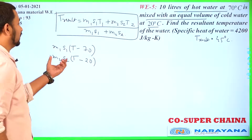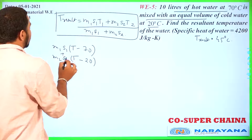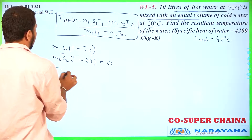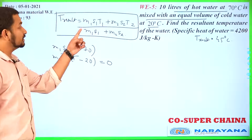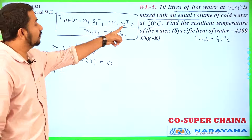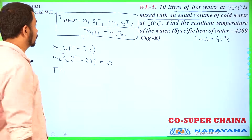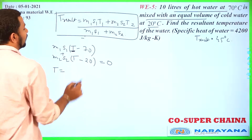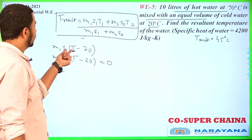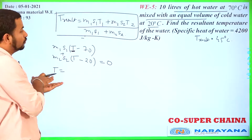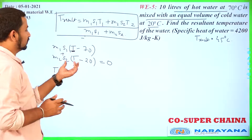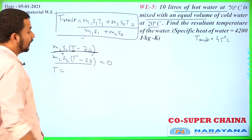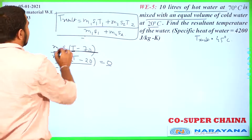The total heat exchange, since no heat is exchanged with the surroundings, is equated with 0. If we equate this with 0 and solve for T, the value comes as m1s1t1 plus m2s2t2 divided by m1s1 plus m2s2. We have taken the common temperature to be higher than both 70 and 20 degrees. The net heat exchange is zero because no heat is lost to the surroundings, giving us T resultant.